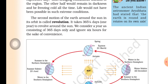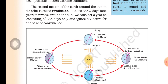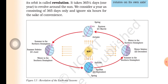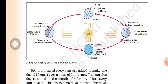The second motion of the earth — moving around the sun in its orbit — is called revolution. It takes 365 and a quarter days to revolve around the sun. We consider a year as consisting of 365 days and ignore the six hours for the sake of convenience.